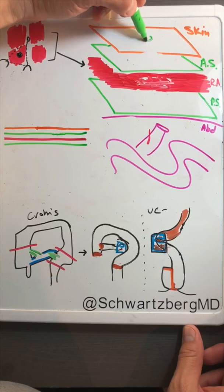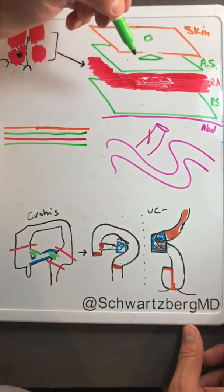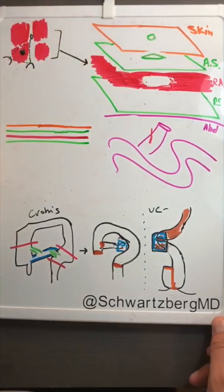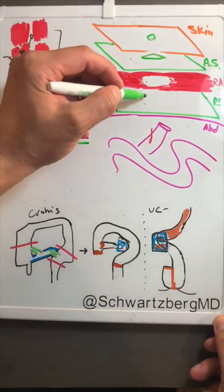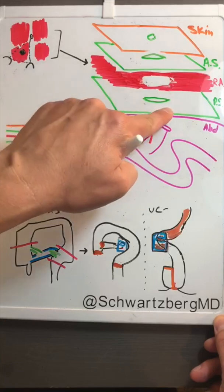When we make a stoma, we make a little hole in the skin, a little slit in the anterior sheath, and move the muscle out of the way. We don't resect the muscle, we just move it out of the way. Then we make a little slit here in the posterior sheath. Now we're in the abdomen.